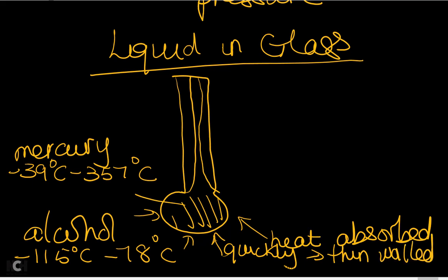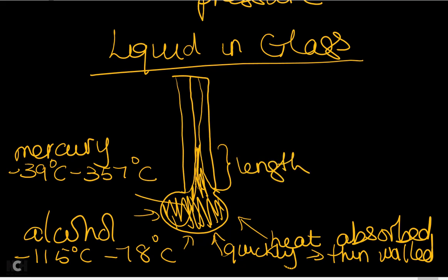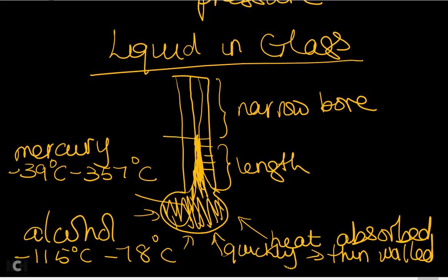The liquid rises through the narrow bore — which is cylindrical — allowing quick ascension of the liquid. As the liquid rises to a certain height, it corresponds to a temperature value. The outer casing is thicker glass to reduce heat loss, and it is calibrated with markings so you can directly read the temperature.